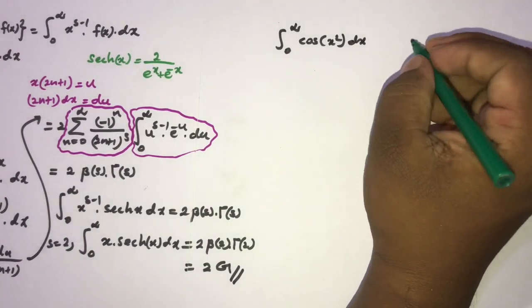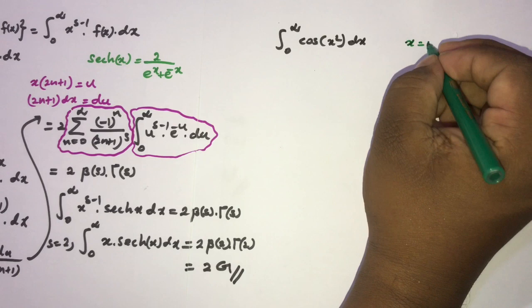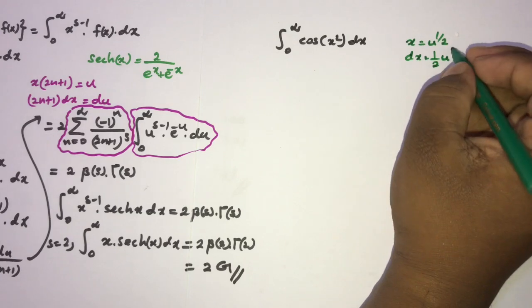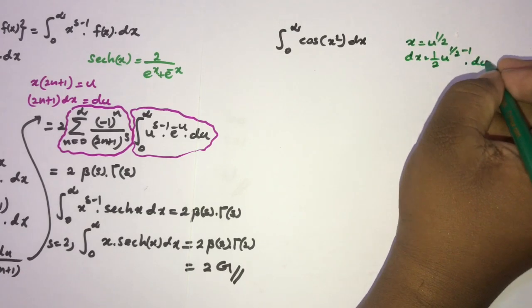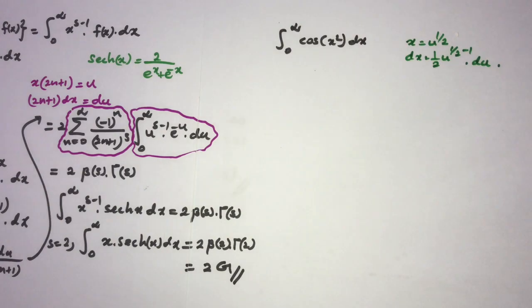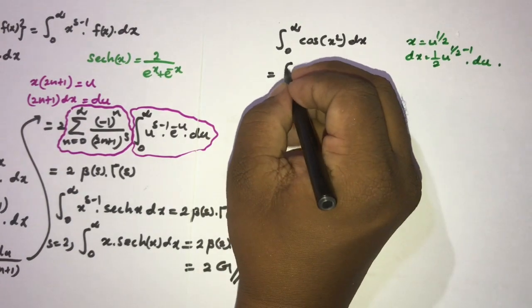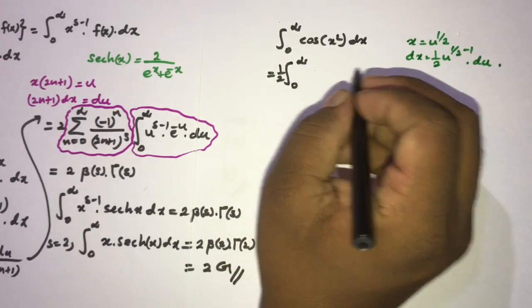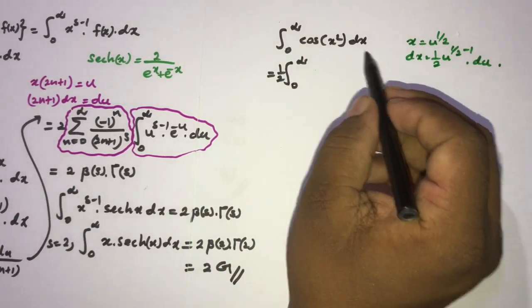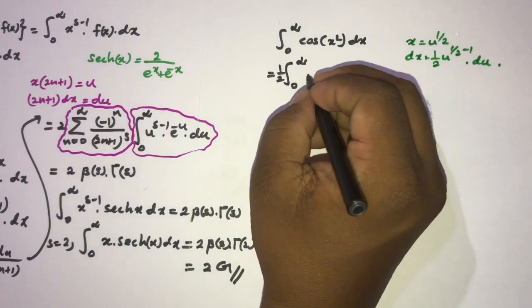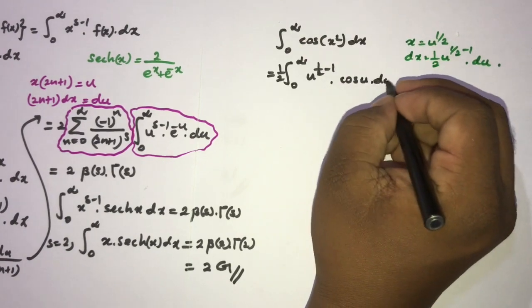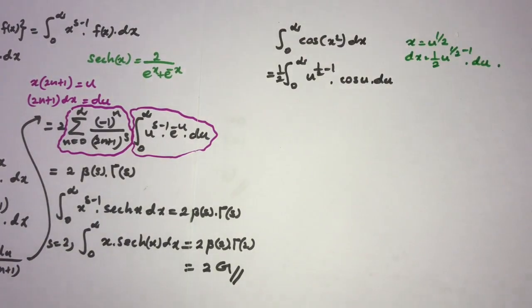I take the substitution x = u^{1/2}, so dx = (1/2) u^{1/2 - 1} du = (1/2) u^{-1/2} du. The integral becomes (1/2) times the integral from 0 to infinity of u^{1/2 - 1} cos(u) du.